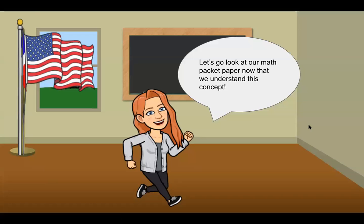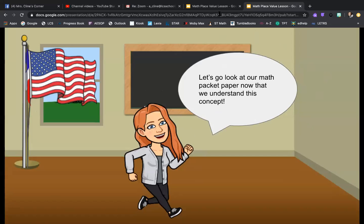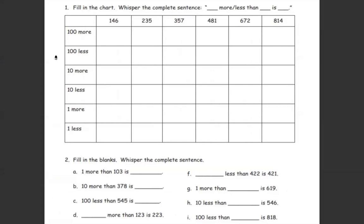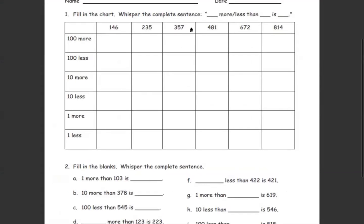All right, let's go ahead and take a look at our math paper now that we understand this concept. We are now going to look at our math paper — I hope I won't need to spend as much time explaining since we did so much together already. They give us numbers at the top and then tell us they want 100 more, 100 less, 10 more, 10 less, one more, one less.